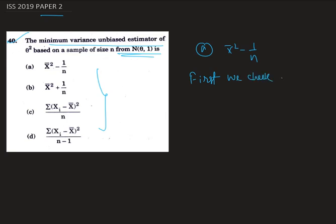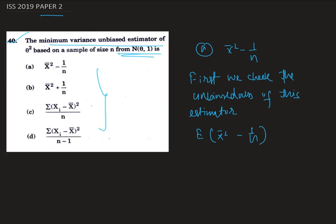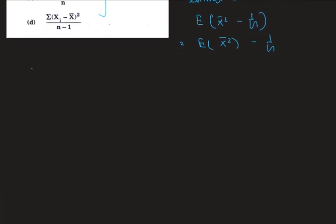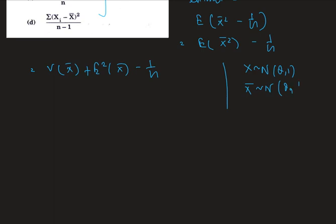We check the unbiasedness of this estimator. The expectation of x-bar squared minus 1/n equals the expectation of x-bar squared minus 1/n. Now, expectation of x-bar squared is variance of x-bar plus expectation of x-bar, squared. As X follows Normal(theta, 1), x-bar follows Normal(theta, 1/n), so variance of x-bar is 1/n and expectation of x-bar is theta.